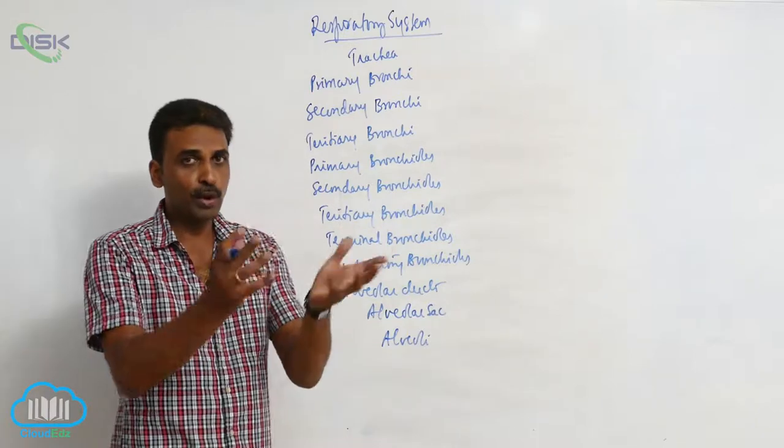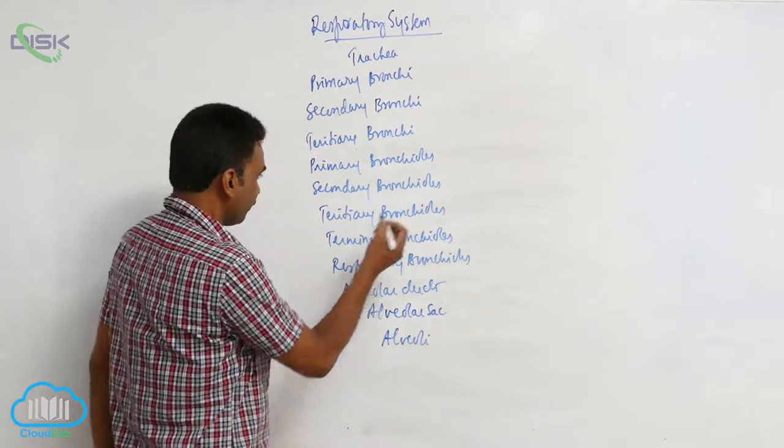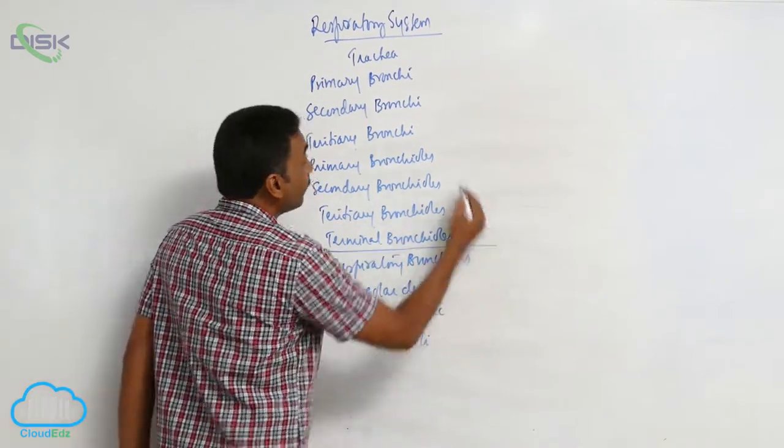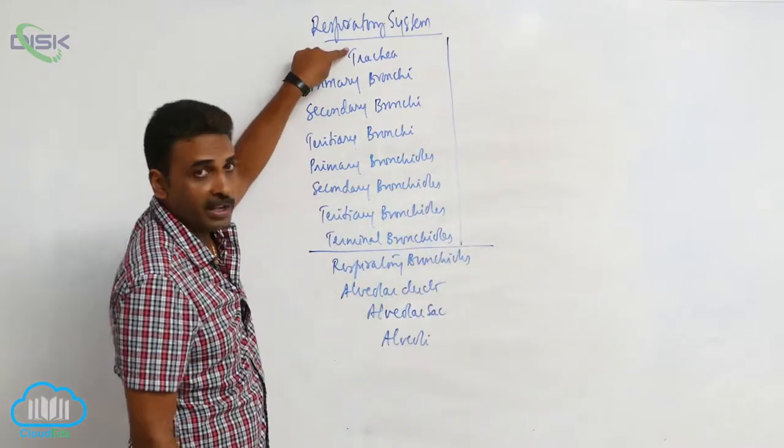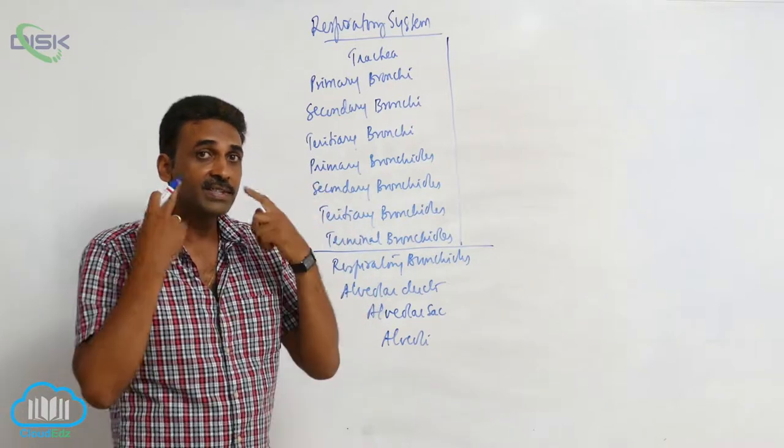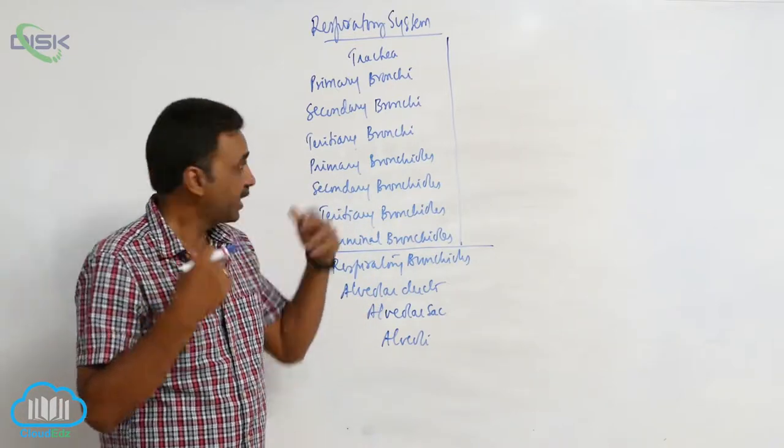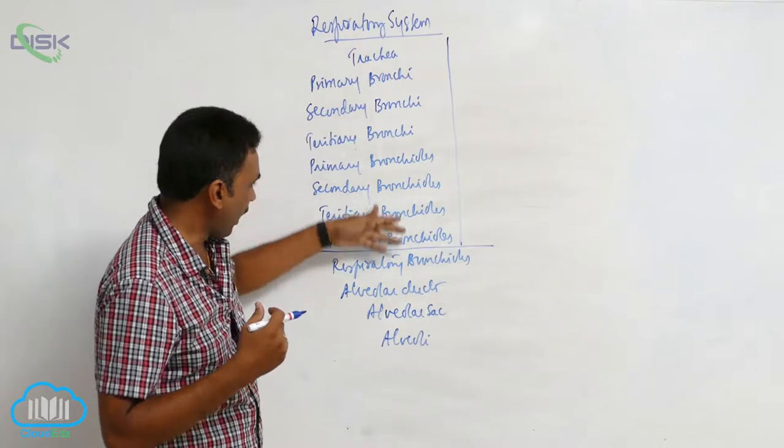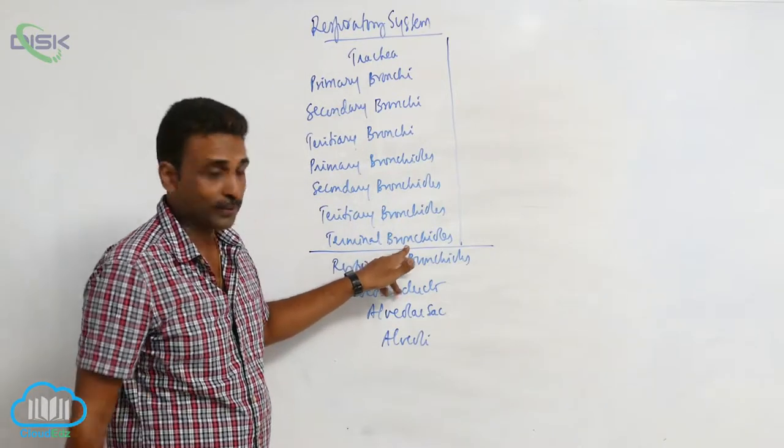This is the bronchiolar tree. Up to here, this area from the trachea starting from external nostrils, nasal cavities, the pharynx, trachea, bronchi, and up to terminal bronchioles.